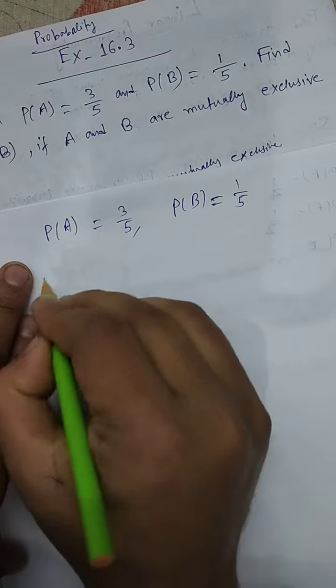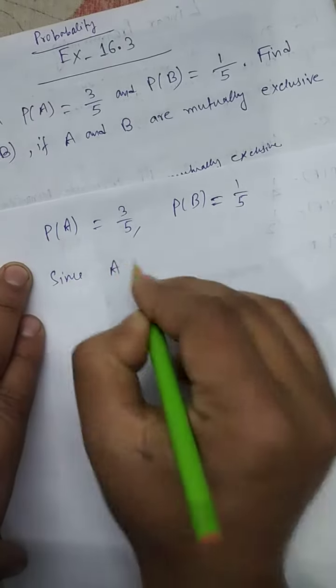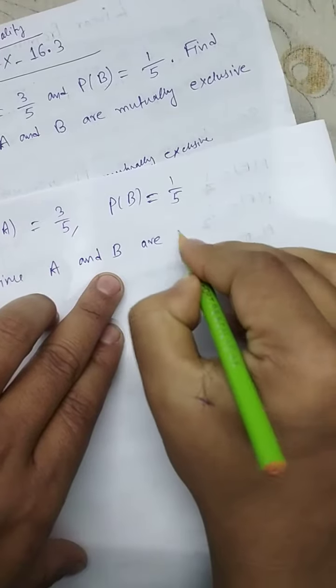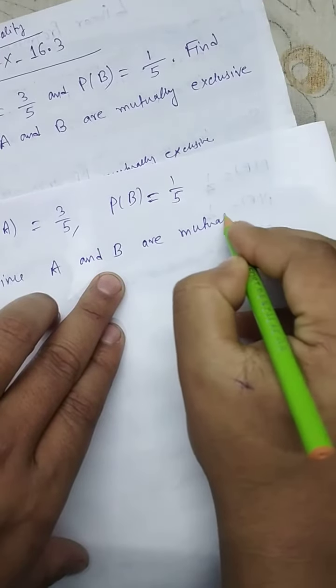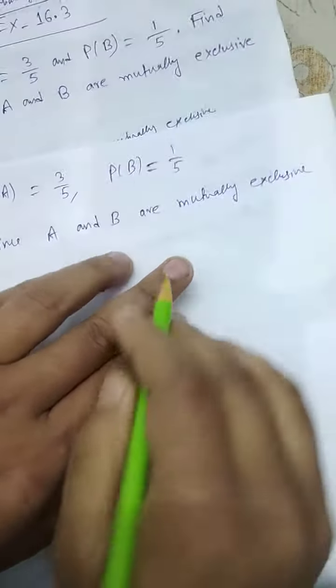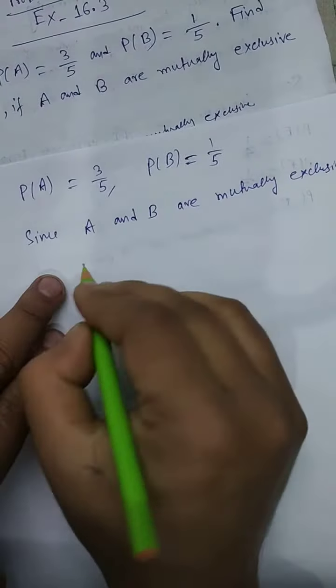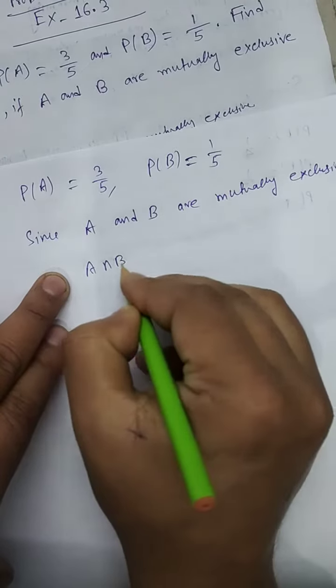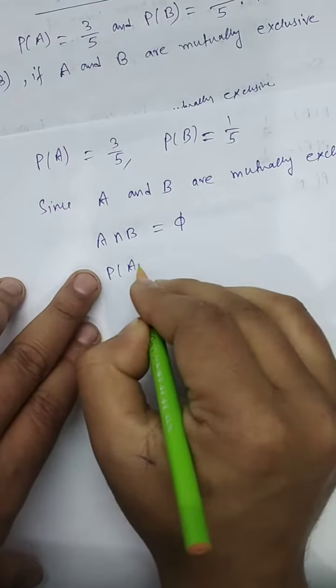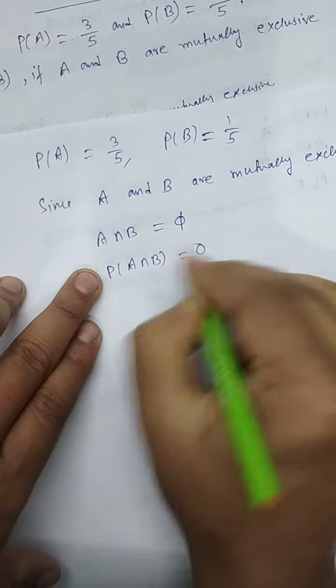So here, since A and B are mutually exclusive, we can write A intersection B equals phi (empty set). So now probability of A intersection B equals 0.